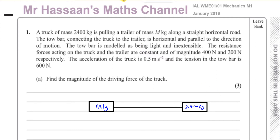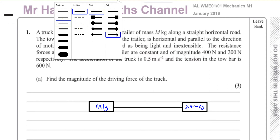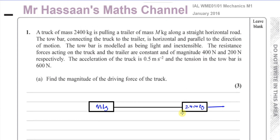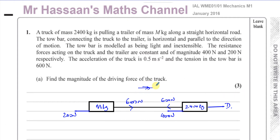There's a driving force which we have to find — I'll put that in a different color so it's a bit clearer. So you've got a driving force here, and then you have resistance to motion on the truck and the trailer. The driving force, let's call that D. The resistance to motion on the truck is 400 newtons and on the trailer it's 200 newtons. There's a tension in the tow bar of 600 newtons, and it's accelerating at 0.5 meters per second squared.